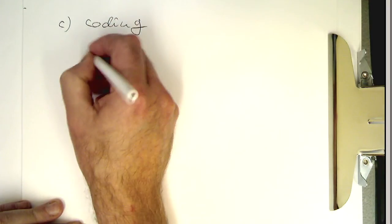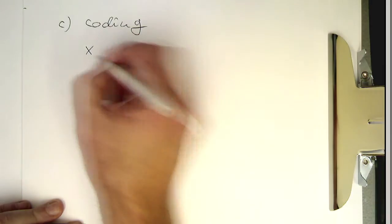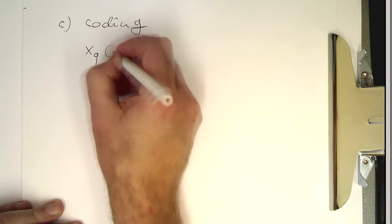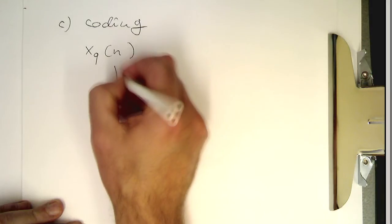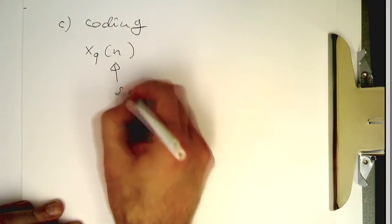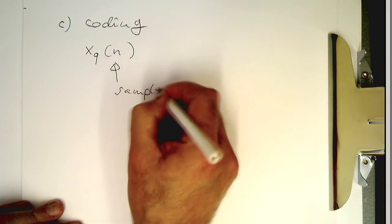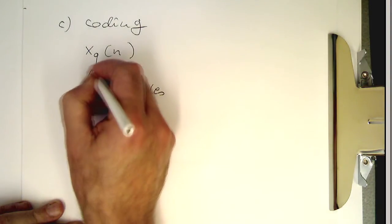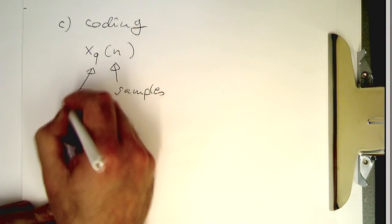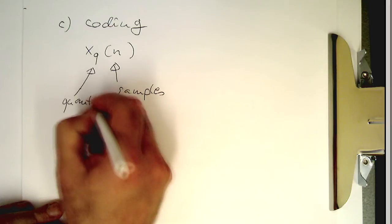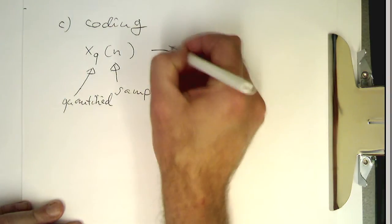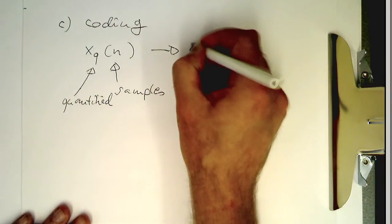So now we've got our variable xq of n. This means we've got samples and that's quantified. And this we just turn into a binary sequence now.